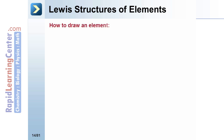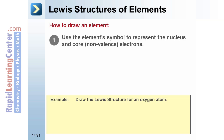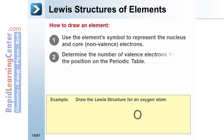To draw a Lewis structure for an element, use the element symbol to represent the nucleus and core electrons. Determine the number of electrons in the valence shell and draw them around the symbol, placing one on each side before doubling up.